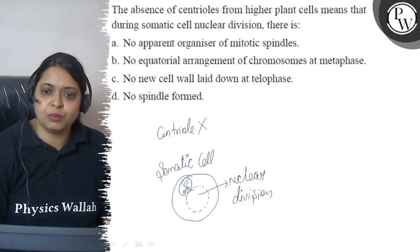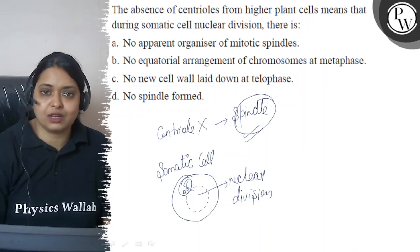Option A: No apparent organizer of mitotic spindle. It is absolutely right. Because if there is no centrioles, then the work of centrioles is to form the spindle or organize it. But when it is not there, then no one will organize it. The first option is right. But before that, let's see other options also.